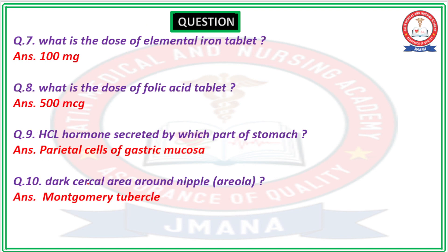Question number 7: What is the dose of elemental iron? The question asks about the dose of elemental iron in pregnancy according to India's guidelines. The right answer is 100 mg — the dose of elemental iron is 100 mg.